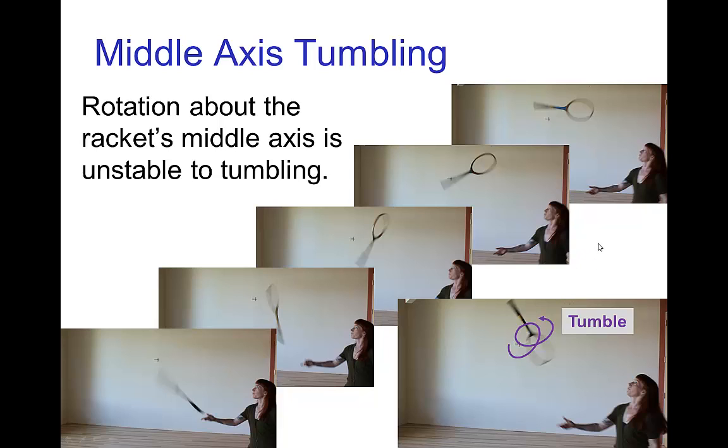By the way, this racket had no strings. So, this has nothing to do with air resistance. It's entirely due to the shape of the object and the axis about which it's turning.